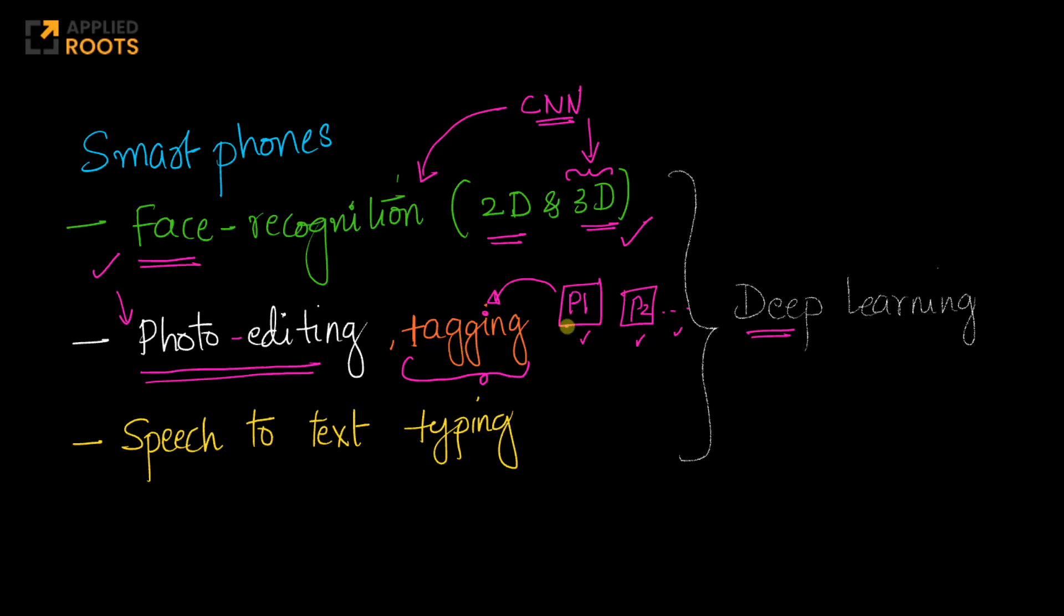Photo tagging, depending on the applications being used, some of it can be done on the device itself. Some of it could be done on the cloud. For example, Google Photos does it on the cloud extensively.